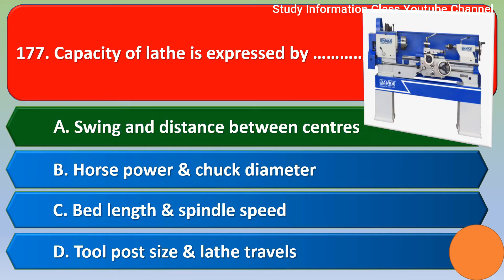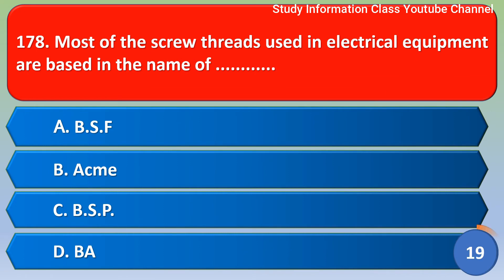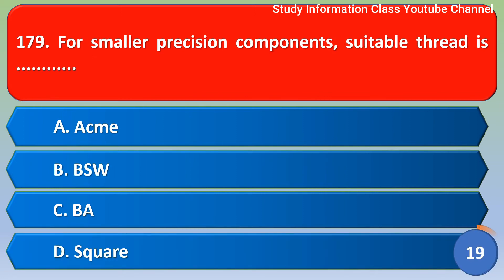Next question: most screw threads used in electrical equipment are based in the name of — option A: BSF, option B: BA, option C: BSP, option D: BA. The correct answer is option D: BA.